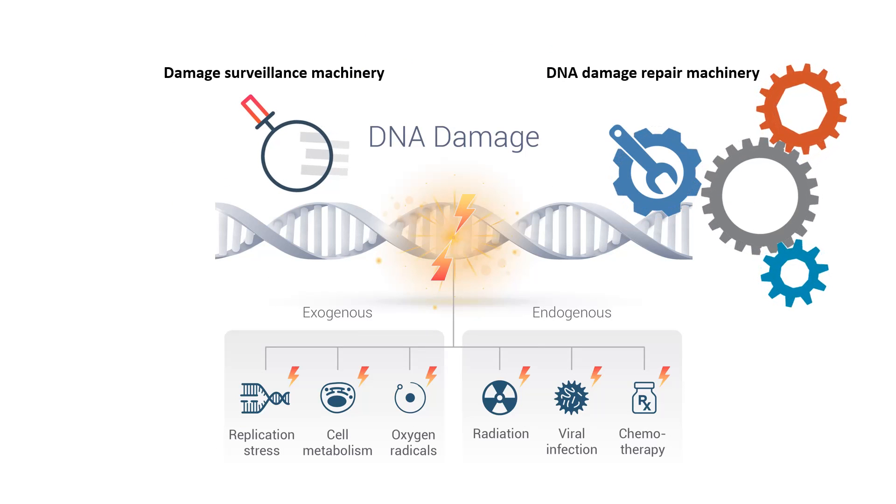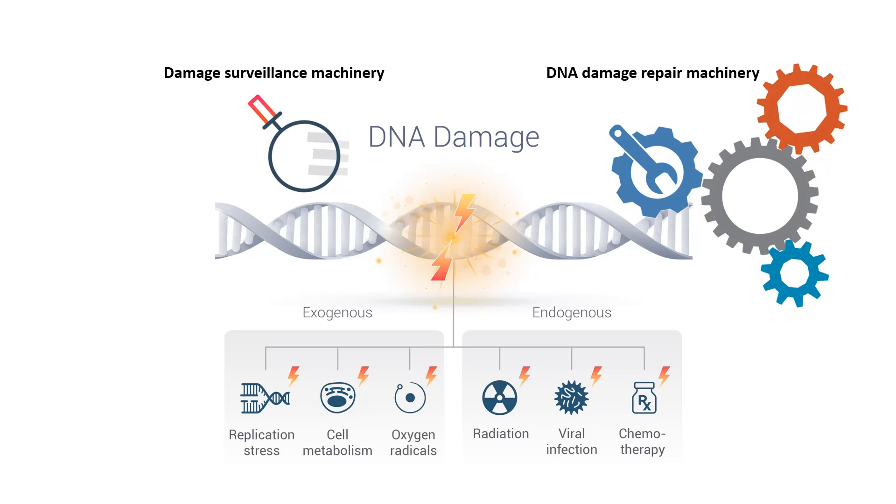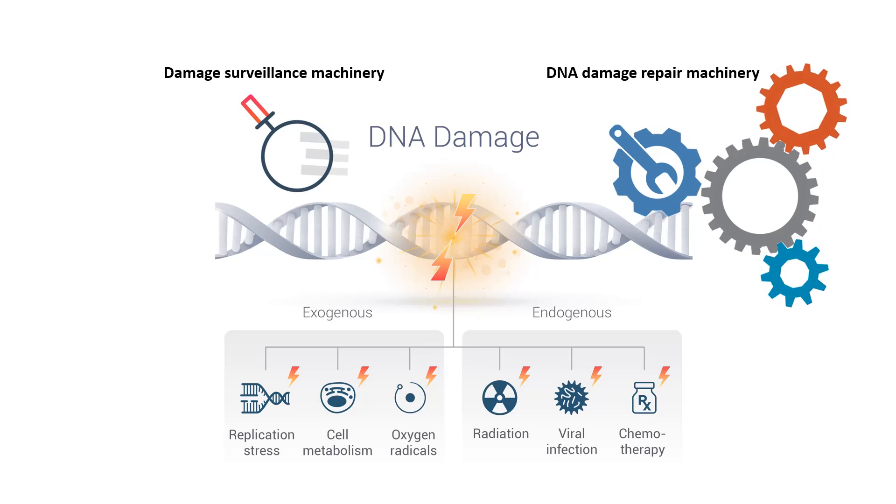But imagine a situation where there is a mutation itself in the DNA repair machinery or the damage detection system which might not detect this kind of mistakes and overlook this kind of mistakes. As a result, there would be overall more mutations, and as a result, there is a high probability that these proto-oncogenes would be activated in form of an oncogene, and that might lead to uncontrolled growth and cancer.